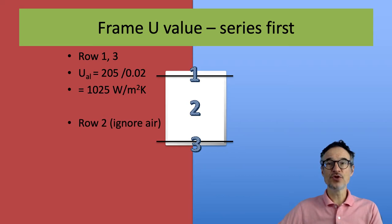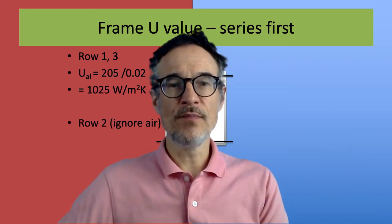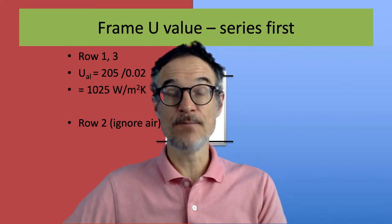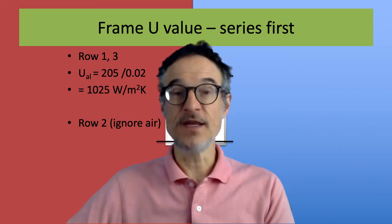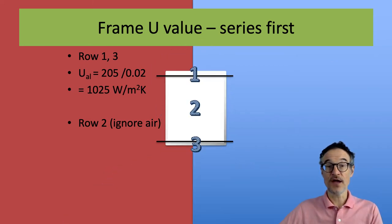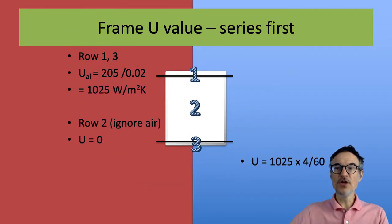And row two, we're basically saying that air is a much better insulator than aluminum. So let's just say there's no heat going through there, all the heat's going through the aluminum. So the U value is zero. Of course, it's not really zero. So we look at the ratio of the area and we get something like 68.